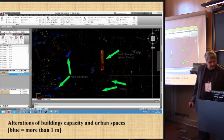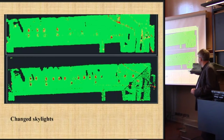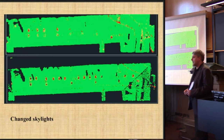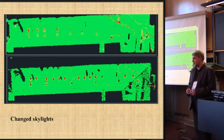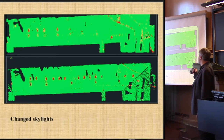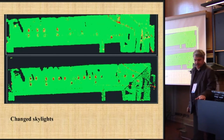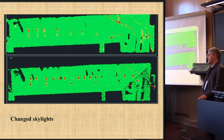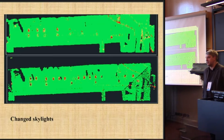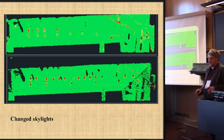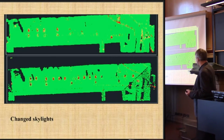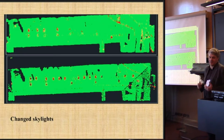Our next investigation was an investigation of changes in skylights. But it was not too successful. We found some changes, but in this case the biggest problem is that skylights are very flexible. It is very difficult to detect this using 3D scanning technology, as we can only find changes in shape. Usually a skylight change is about 7 centimeters, which is not too successful to detect reliably.